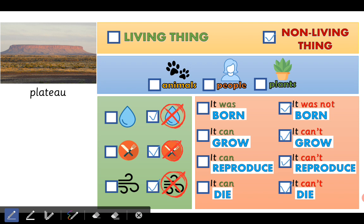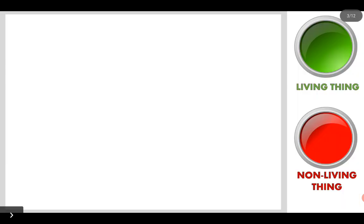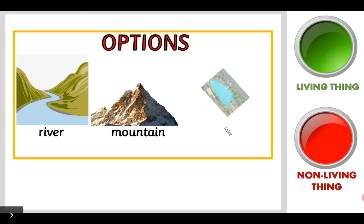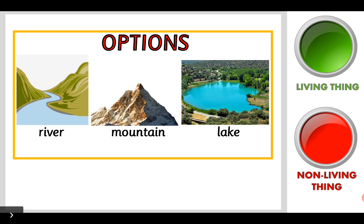Let's move on because now we're going to make a landscape. Here we have got two buttons — the living thing button and the non-living thing button. There is a screen here and we're going to make a landscape in the middle. What do you prefer to put first? A living thing or a non-living thing? I'm going to choose non-living thing. Now I have got three options: river, mountain and lake, because they are non-living things.